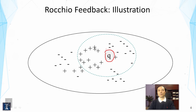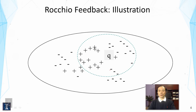The plus symbols are relevant documents, and the minus symbols are negative documents. Our goal is to move this query vector to some position to improve retrieval accuracy. By looking at this diagram, where should we move the query vector so that we can improve retrieval accuracy?